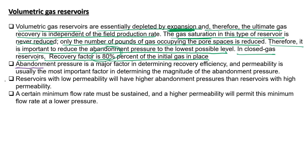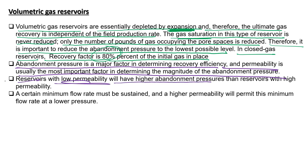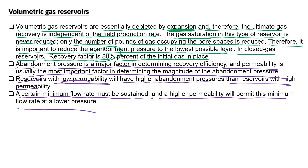Abandonment pressure is a major factor in determining recovery efficiency, and permeability is the most important factor in determining its magnitude. Reservoirs with low permeability have higher abandonment pressure than those with high permeability, because a minimum flow rate must be sustained and higher permeability permits this at a lower pressure. Everything works by virtue of gas expansion on reducing reservoir pressure.